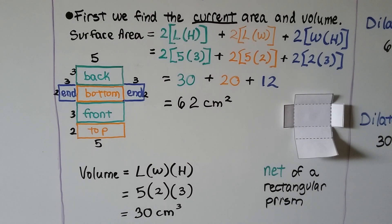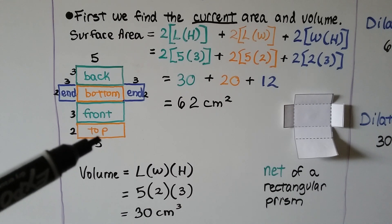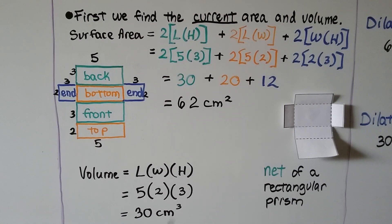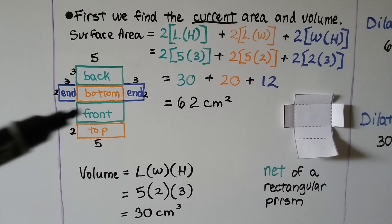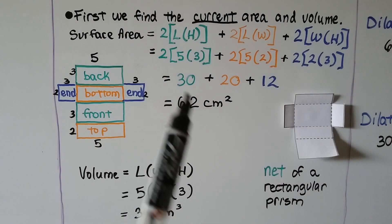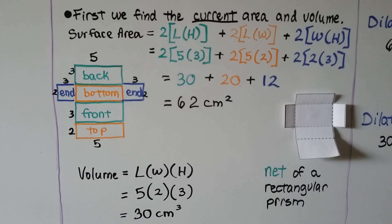We've got a top and a bottom, and the width was 2, so this is a 2. And our length is a 5, so we're going to do 2 times the length times the width, or 2 times 5 times 2. Then we've got our ends, the width is a 2 and the height is a 3, so we've got 2 times 3, twice. So we have 2 times 2 times 3. This makes 30, this makes 20, this makes 12. We add them up and get 62 centimeters squared. That's our surface area.